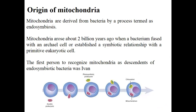Mitochondria are derived from bacteria by a process termed endosymbiosis. The theory holds that mitochondria arose about 2 billion years ago when a bacterium specifically fused with a host cell and became dependent on that cell for its functions and survival, eventually producing energy for the cell.